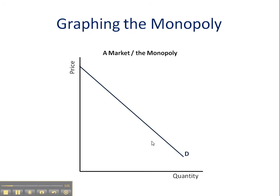The monopolist faces the market downward sloping demand curve. And that means in order to sell more, the monopolist has to lower his price. It's helpful when graphing the monopoly to make your demand curve touch the price axis. Because the monopolist has to lower the price to sell more, the marginal revenue earned on increased units of output is falling twice as quickly as the monopolist's demand. So the marginal revenue curve and the demand curve are divorced in this situation.